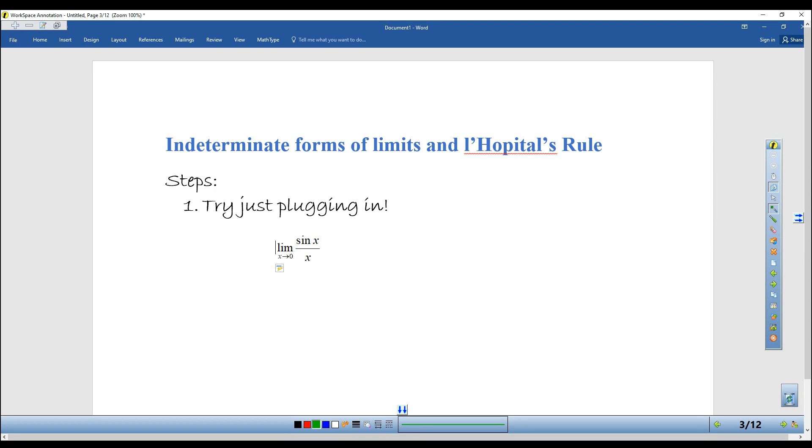Step one: just try plugging it in. So I plug in zero for sine of x and for x, and when I simplify that, I get zero over zero, which brings us to step two.